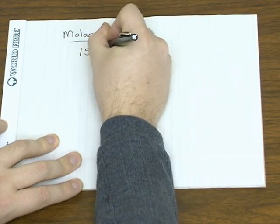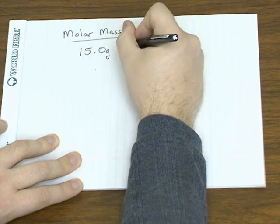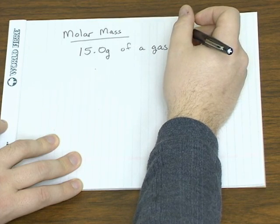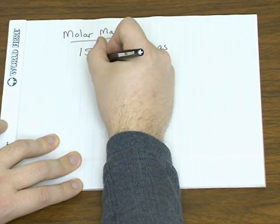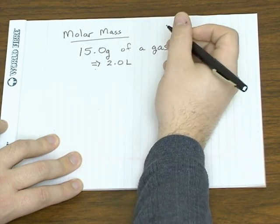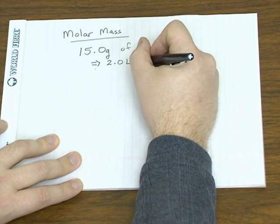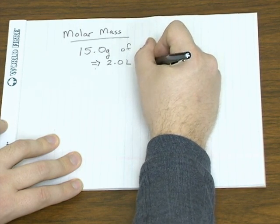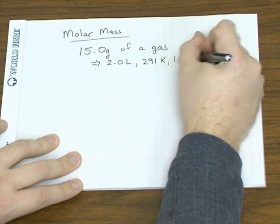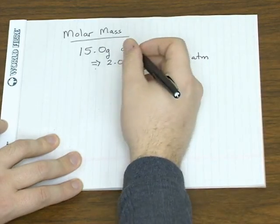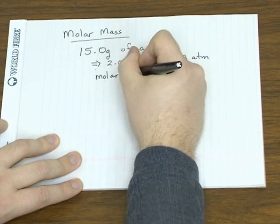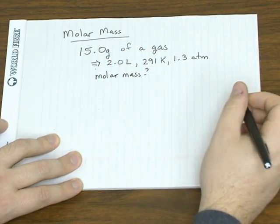So for example, let's say you have 15 grams of a gas in a 2 liter container at 291 Kelvin and it exerts a pressure of 1.3 atmospheres. Using that information, we should be able to come up with the molar mass.